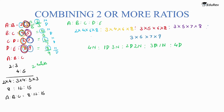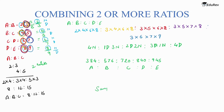Multiplying these values gives: 2 × 4 × 6 × 8 = 384, then 576, 720, 840, and 945. So A is to B is to C is to D is to E equals 384 is to 576 is to 720 is to 840 is to 945. You can then simplify by the common factor to get the final answer.